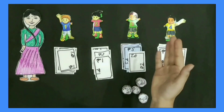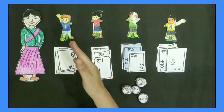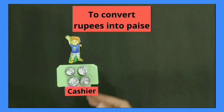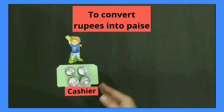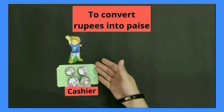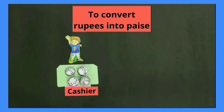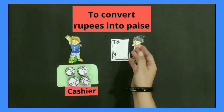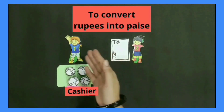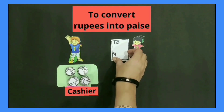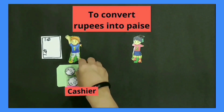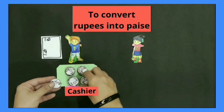Now each child will go to the cashier to get their rupees converted into paise. Harman became the cashier and had 50 paise coins on his table. Simran came first and told the cashier to give her 50 paise coins for 1 rupee. The cashier gave her 2 coins of 50 paise.